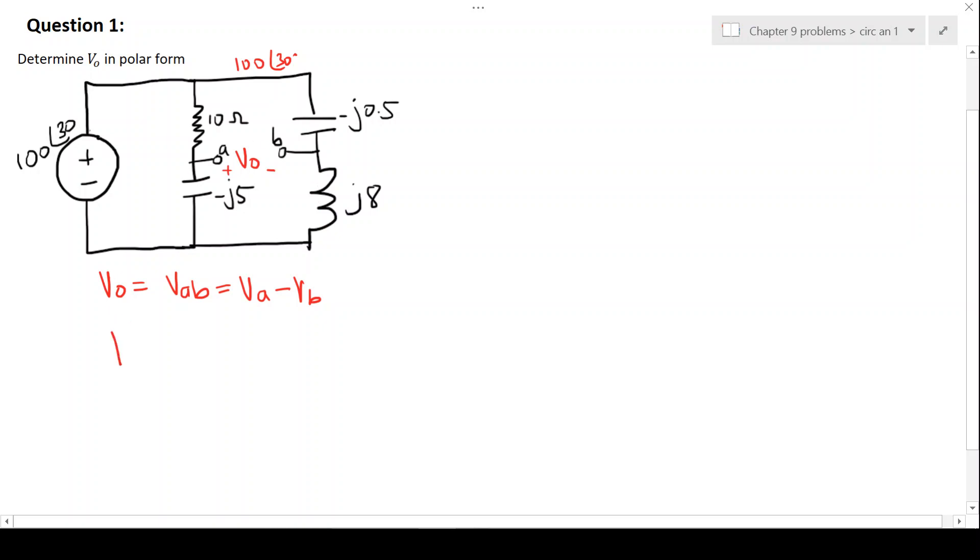So we can say VA is going to give you minus J5 over minus J5 plus 10 multiplied by 100 angle 30.